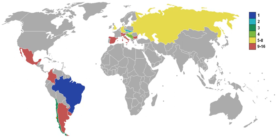UEFA Group 8: Czechoslovakia and Scotland finished level on points, and a playoff on neutral ground was played to decide who would qualify. Czechoslovakia qualified. UEFA Group 9: Spain advanced to the UEFA-CAF Intercontinental Playoff. UEFA Group 10: Yugoslavia advanced to the UEFA-AFC Intercontinental Playoff.